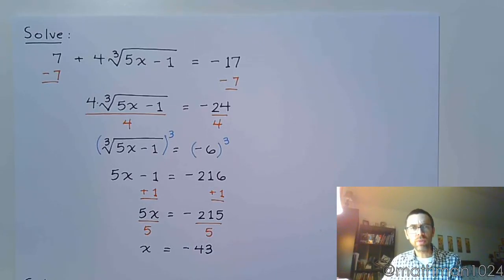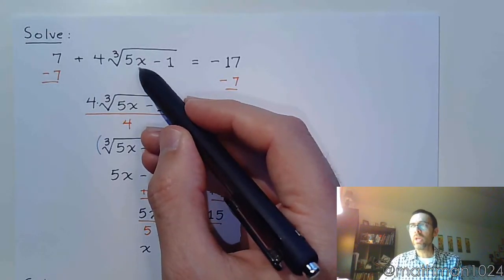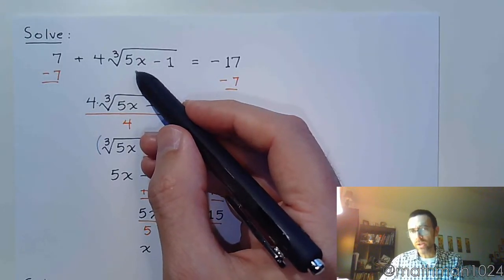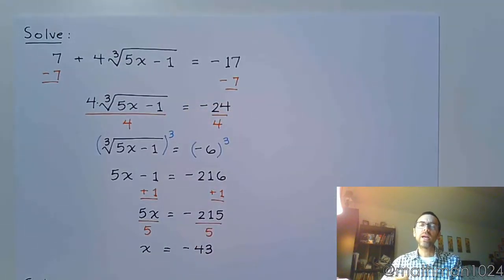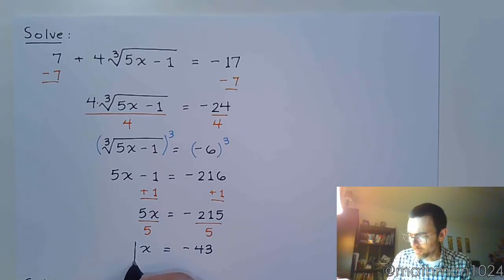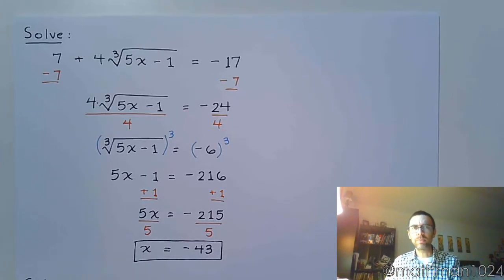And it really shouldn't be much of an exercise to plug negative 43 back in here and check. The radicals where you really need to check are the radicals that have an even root, that have an even index. Things like the cube root. Once you solve for this, everything should be fine. We really shouldn't have any problems with that.